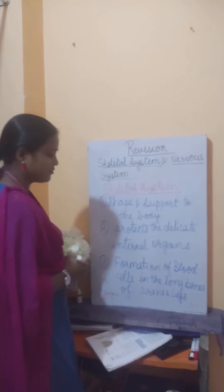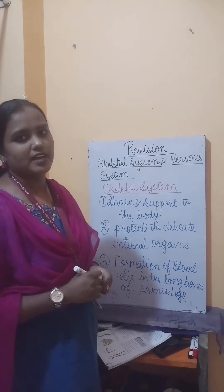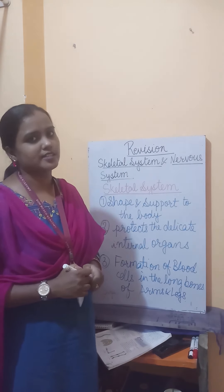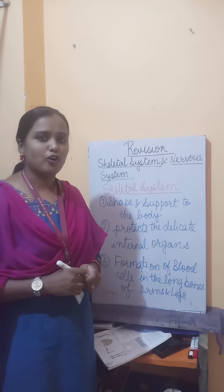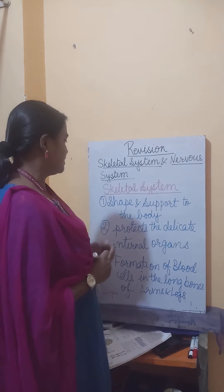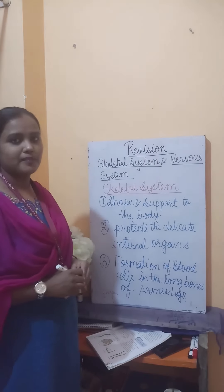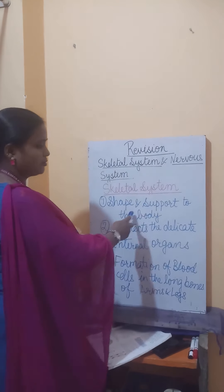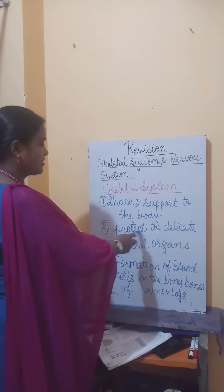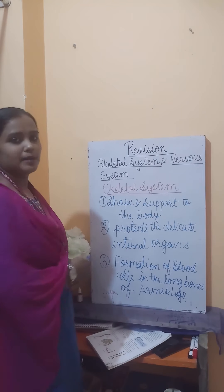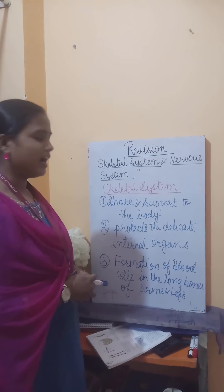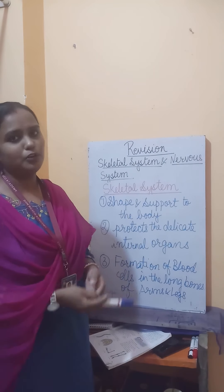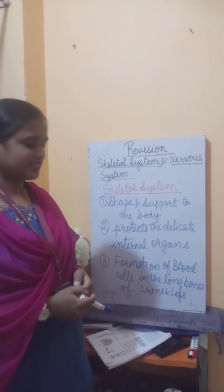The blood cells are made in the bone marrow, which is present inside the long bones of the arms and legs. So the three functions are: it gives shape and support to the body, it protects the delicate internal organs, and blood cells are made in the bone marrow of the long bones of the arms and legs.